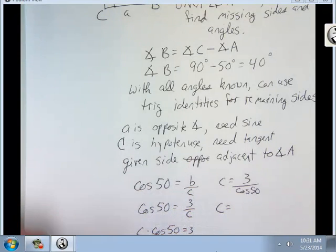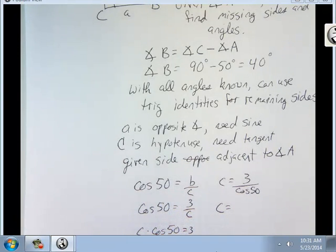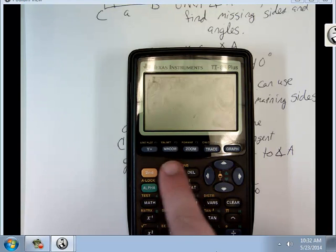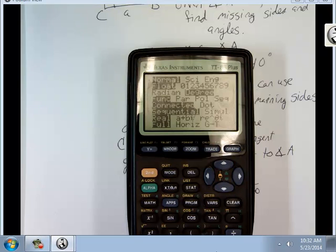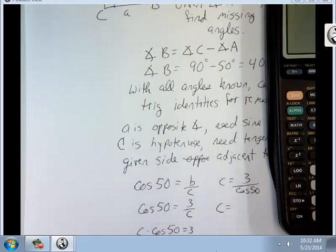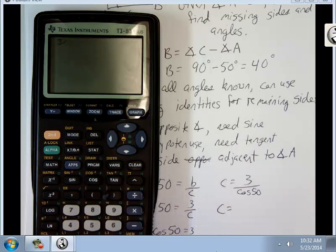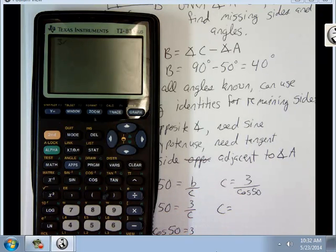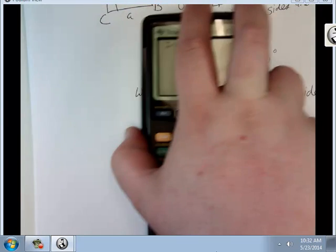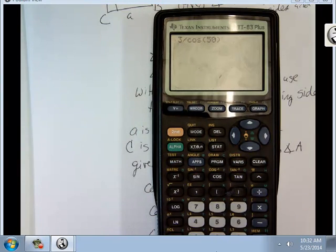So I'm going to get my calculator. Before you do anything, make sure that you're in degree mode. So I need to do 3 divided by cosine 50. Trying to get that in the light. There we go. So I get 4.667.